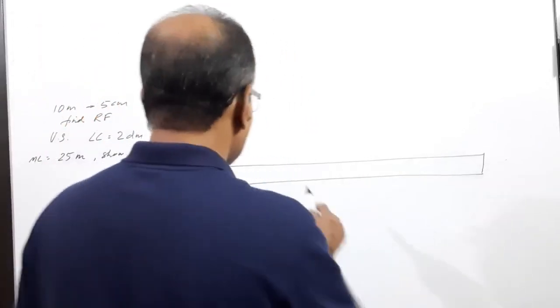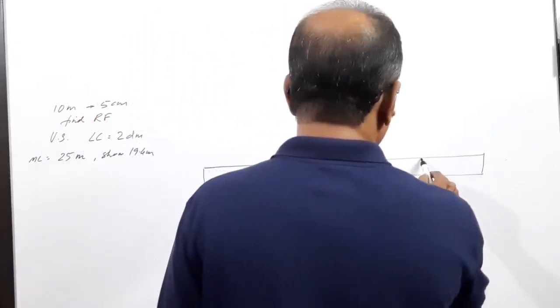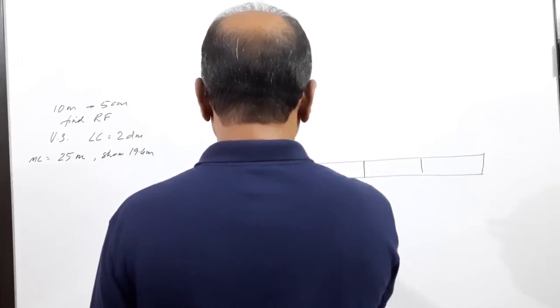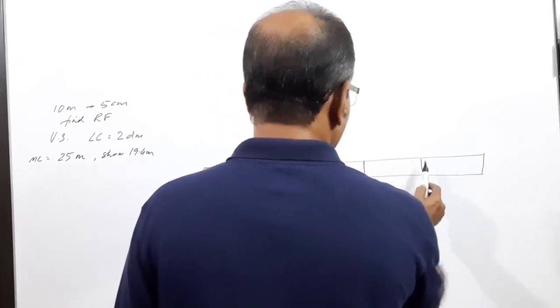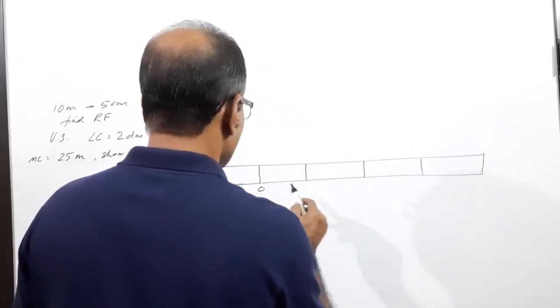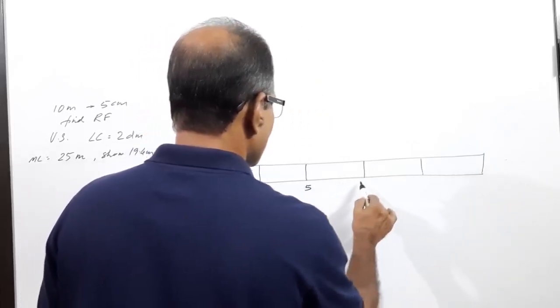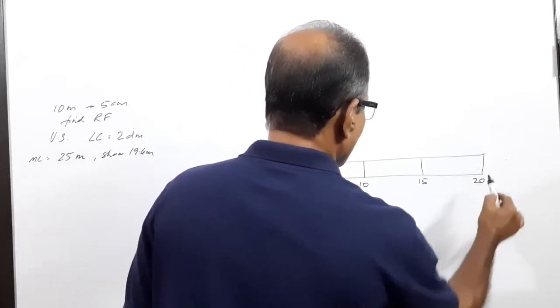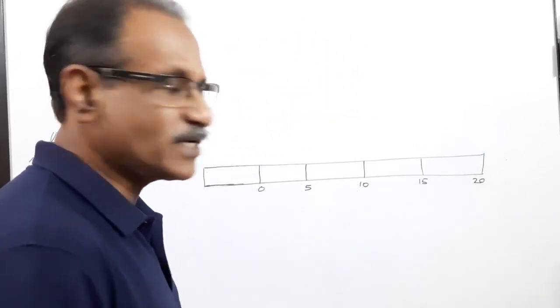Mark 1, 2, 3, 4, 5 divisions. Label them: 0, 5, 10, 15, 20. What's the unit? Meter.